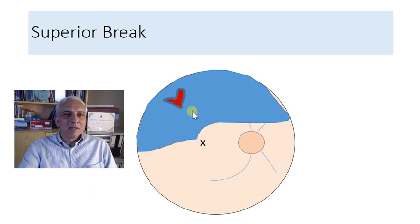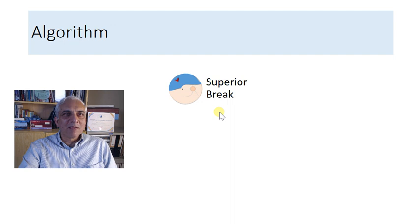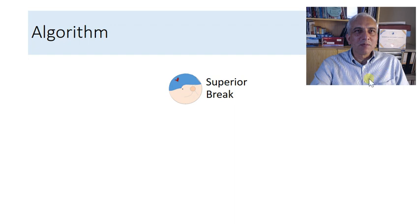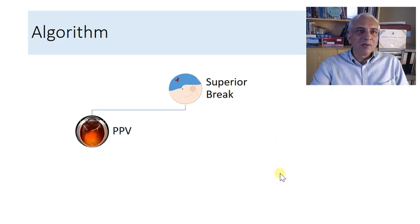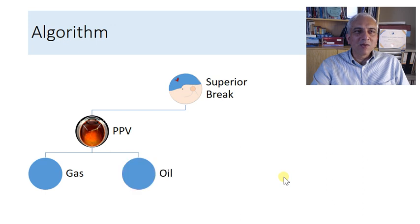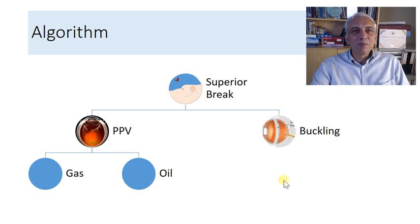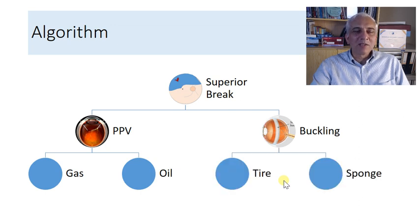The algorithm: if it is a superior break, you can either do a pars plana vitrectomy — either with gas or with silicone oil, though gas is preferred, which could be C2F6, C3F8, or SF6 — or you can do scleral buckling, which could be done with a tire or a sponge.